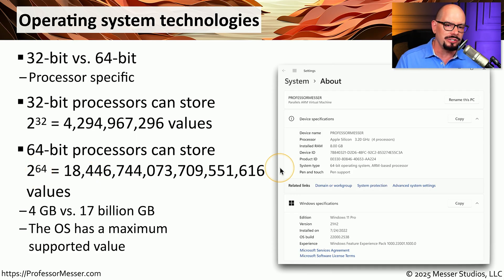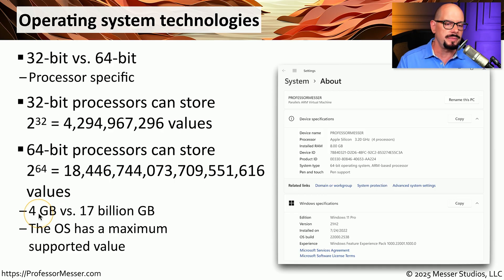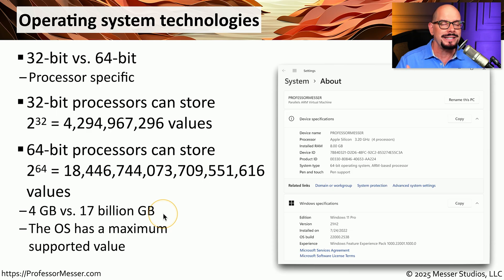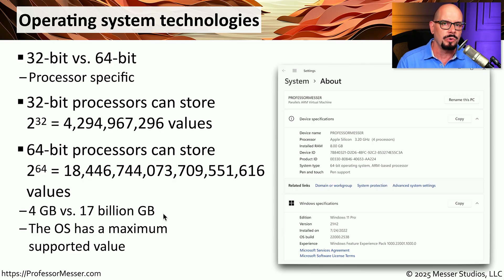That's why we created a 64-bit processor, which can store 2 to the 64th power of total information, and you can see that very large value listed on the screen. To put this in more accessible terms, a 32-bit processor can reference 4 gigabytes of memory, where a 64-bit processor can reference 17 billion gigabytes of memory. Obviously, my computer probably can't reference 17 billion gigabytes, but many operating systems can scale up to very large amounts because they're running a 64-bit processor.